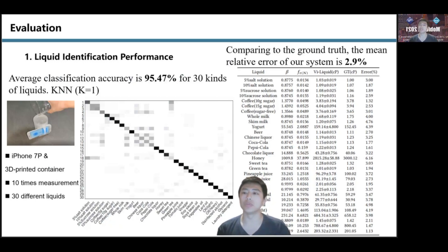Comparing to the ground truth, the mean relative error of our system is 2.9%. We adopt a simple KNN to classify liquids. The average classification accuracy is 95.47% for 30 kinds of liquids.